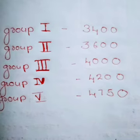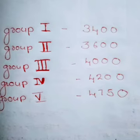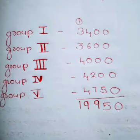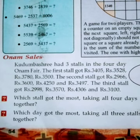Now we find the amount collected by each group. There is another question: what is the total amount raised for the development fund? That means we want to find the total amount collected by all these groups. Add these five amounts and we get the total amount raised for the development fund as 19,950. Let us go to the next activity.